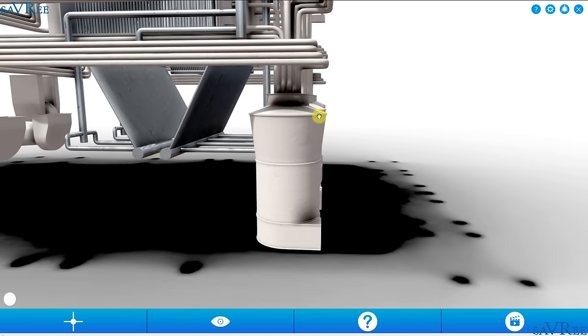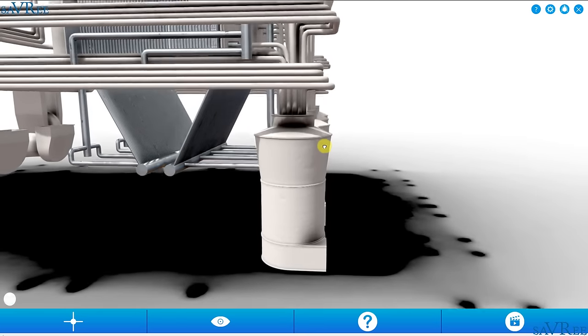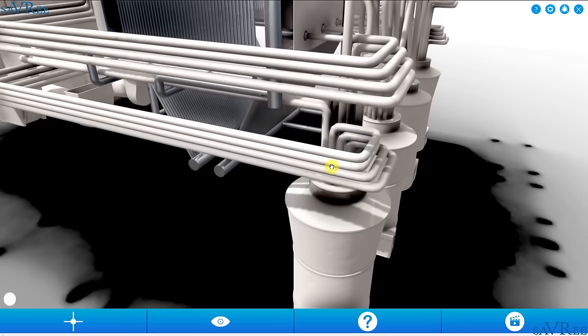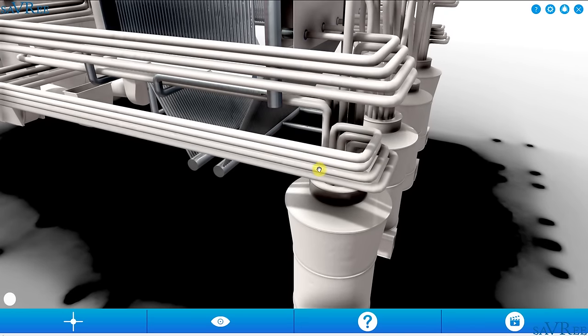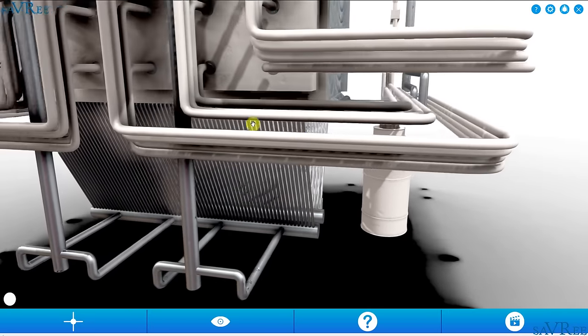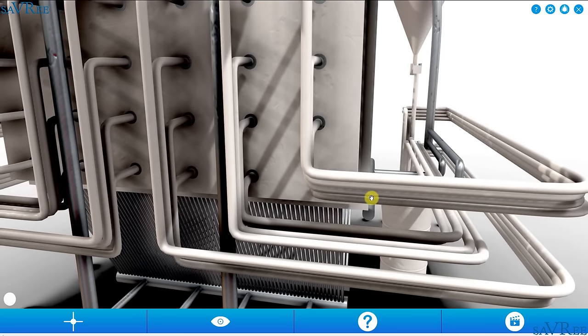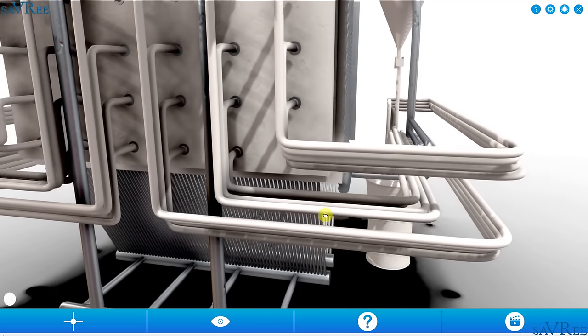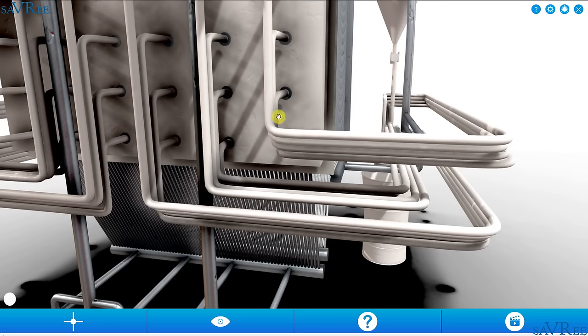Once we've ground and dried and classified our coal, we're going to send it out of these tubes here. See them coming out, and I'll follow them around. You can see them coming across here, and they're all going to feed in. Let me just zoom out slightly. Going to come around here, and they're going to feed in to our burners.